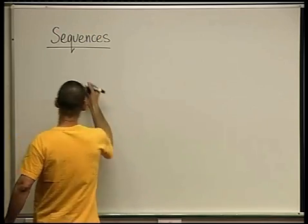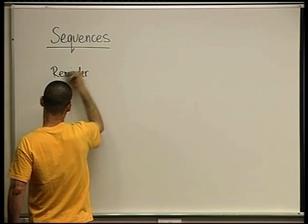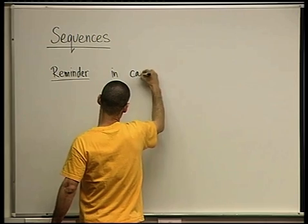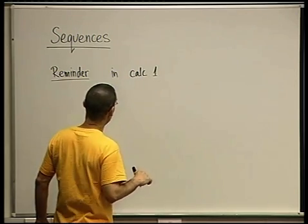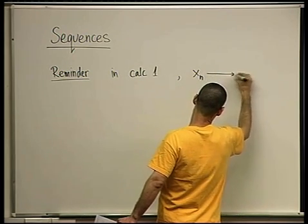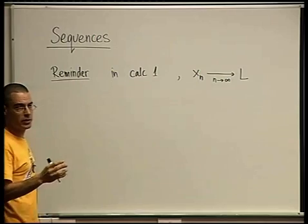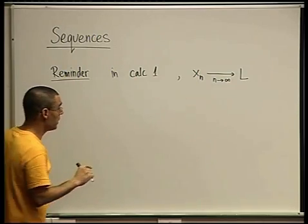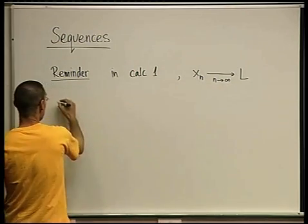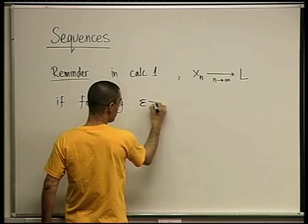First of all, let me remind you what we defined in R. The important notion was the notion of convergence of a sequence. So in calc 1, or in R, when we have a sequence xn converging to L, for every epsilon greater than 0,